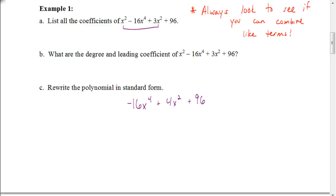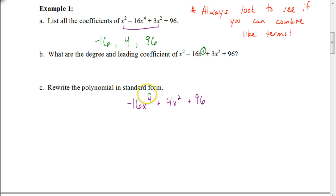Now to answer the question, the coefficients would be negative 16 and 4. The 96 would be the constant — technically attached to x to the zero power, so that coefficient is also called the constant. For the degree and leading coefficient: the largest exponent is 4, so the degree is 4. The leading coefficient, abbreviated LC, is the coefficient attached to that term, which is negative 16.